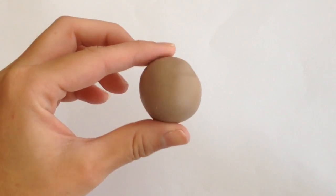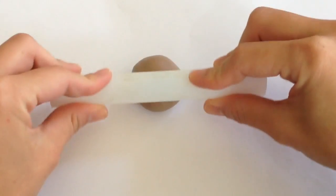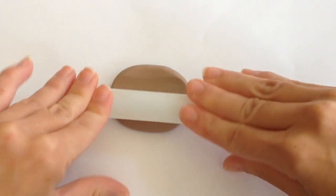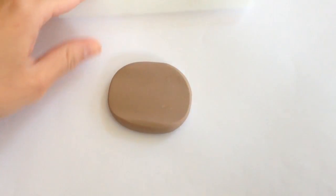For the gingerbread house, you're going to start off with a brown piece of colored clay and roll this into a flat thin sheet. You don't want it to be too thin. I would say mine was about 3 to 4 millimeters thick.